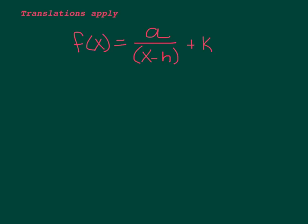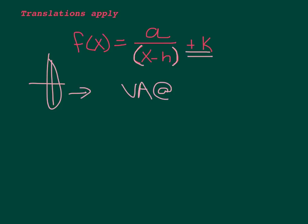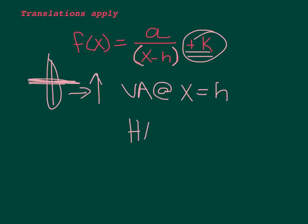When graphing rational functions, the translations we've been talking about all year apply here too. If you have a number other than 1 on top, that's the a value — your stretch or shrink. If you add or subtract something in the denominator with x, that's your horizontal shift. If you add something after the function, that's your vertical shift. The most important thing to know is what changes your asymptotes. H changes your vertical asymptote — vertical asymptote at x equals h. If you shift it up or down, the horizontal asymptote moves, so k affects the horizontal asymptote at y equals k.